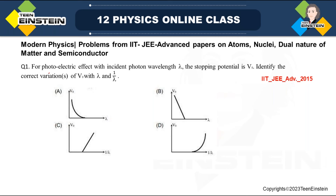The question says: for a photoelectric effect with incident photon wavelength lambda and stopping potential V0, identify the correct variations of V0 — which is stopping potential — with lambda and with 1/lambda. Whenever we see this kind of graph and need to see the variations with any other parameter, let us first write down Einstein's famous equation for the photoelectric effect.